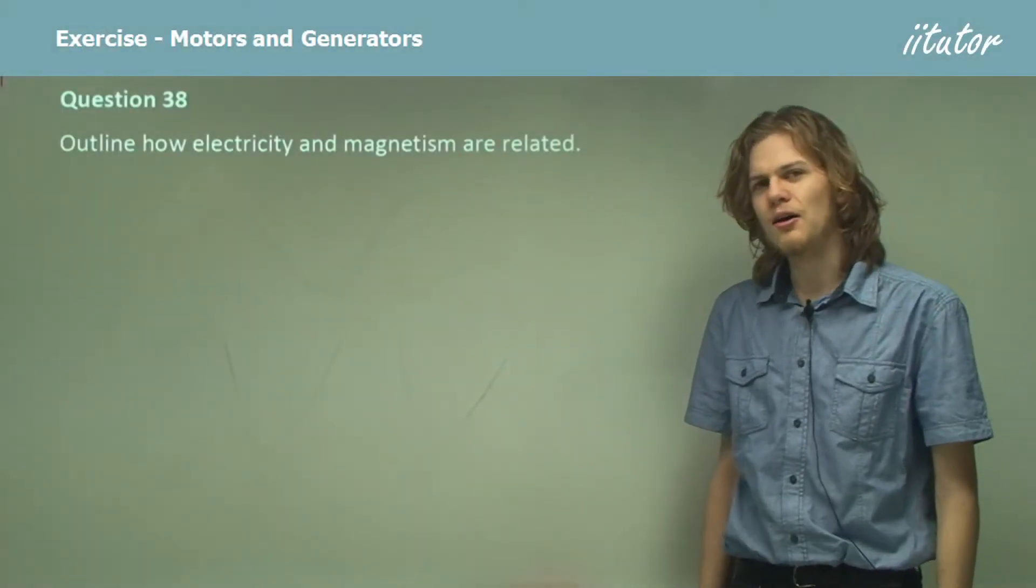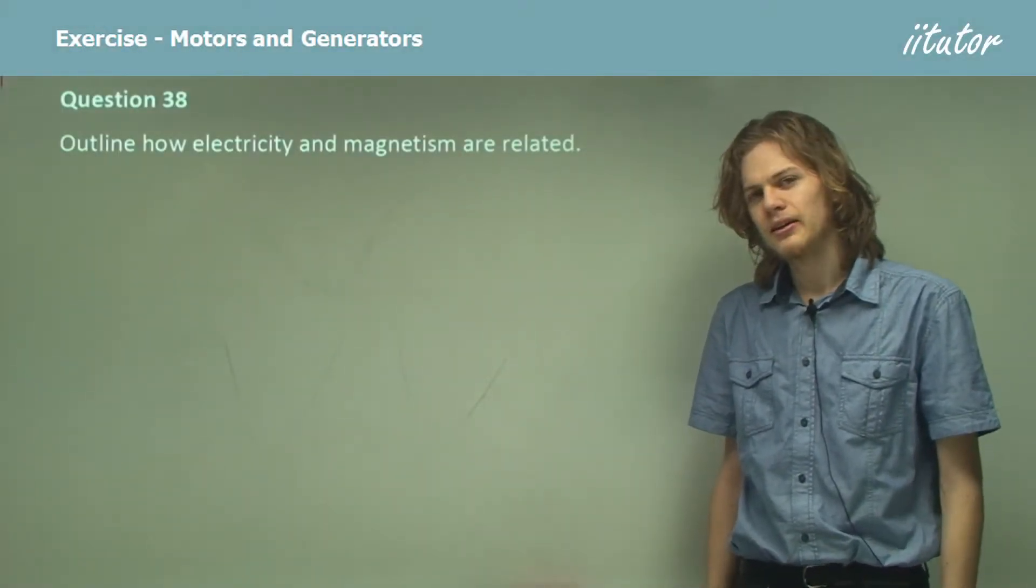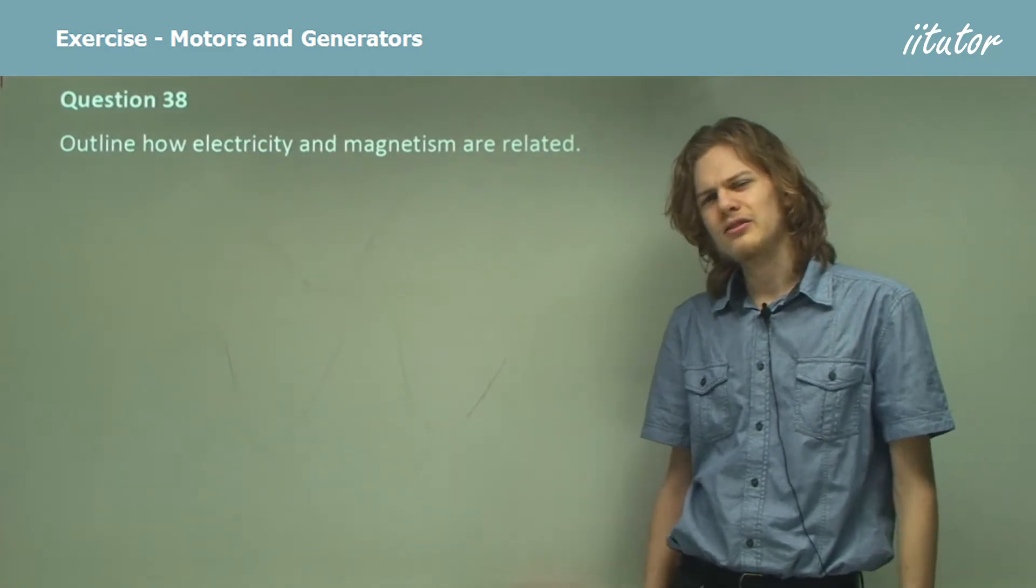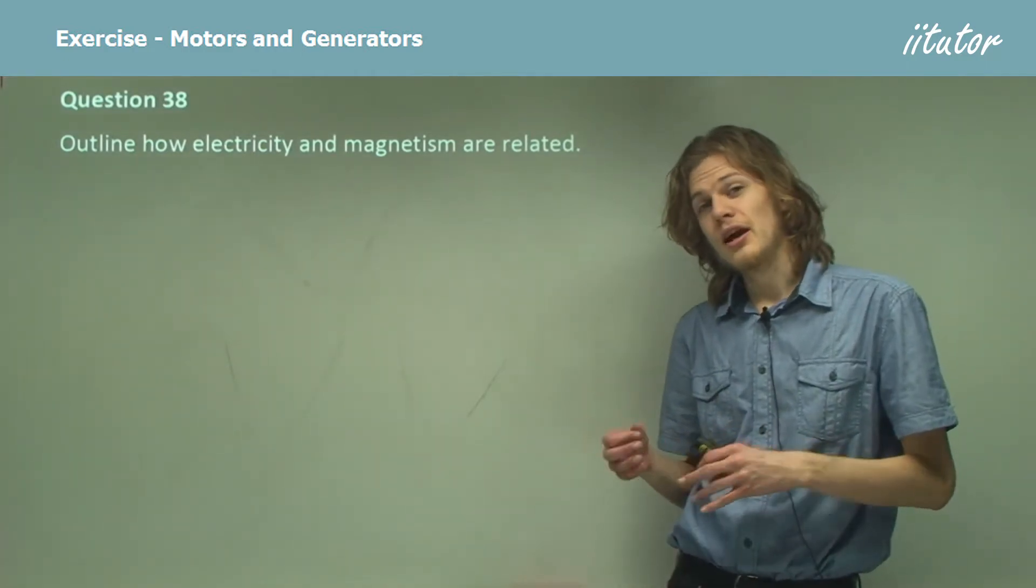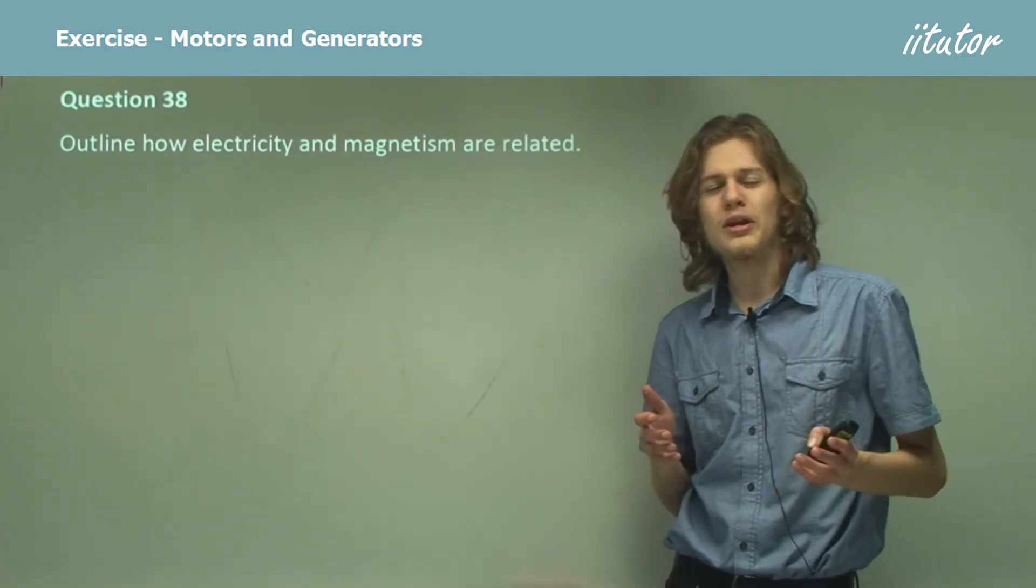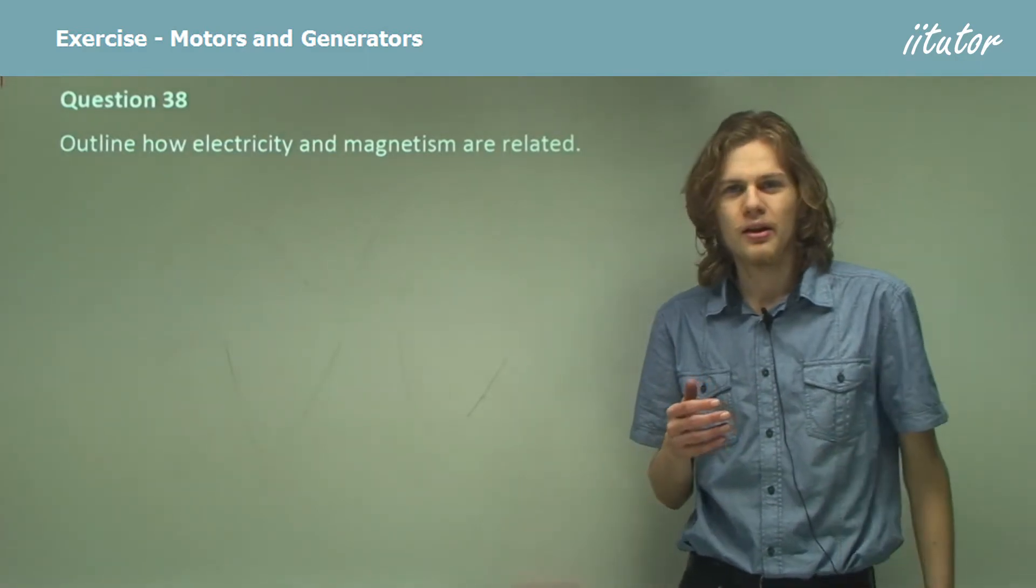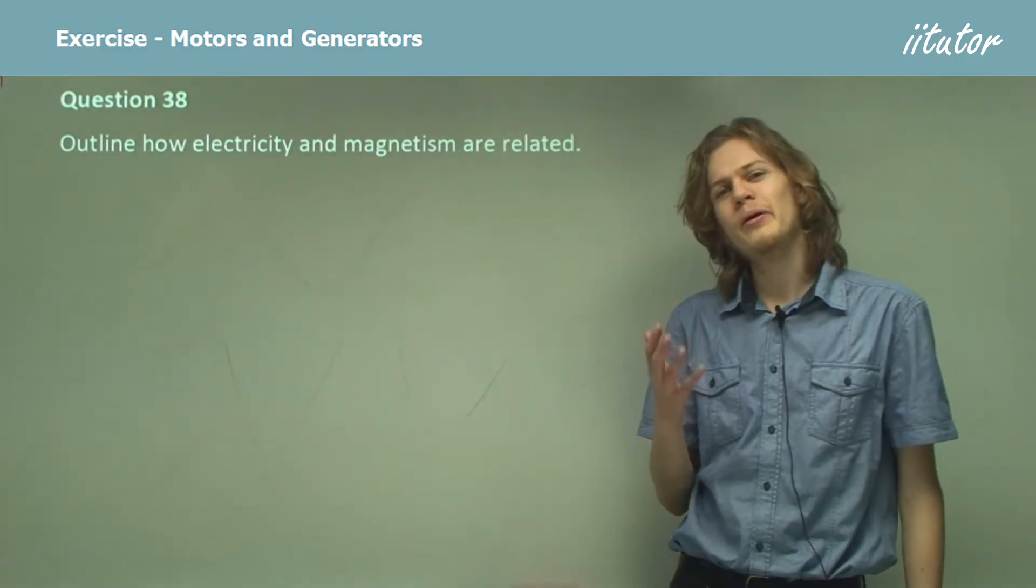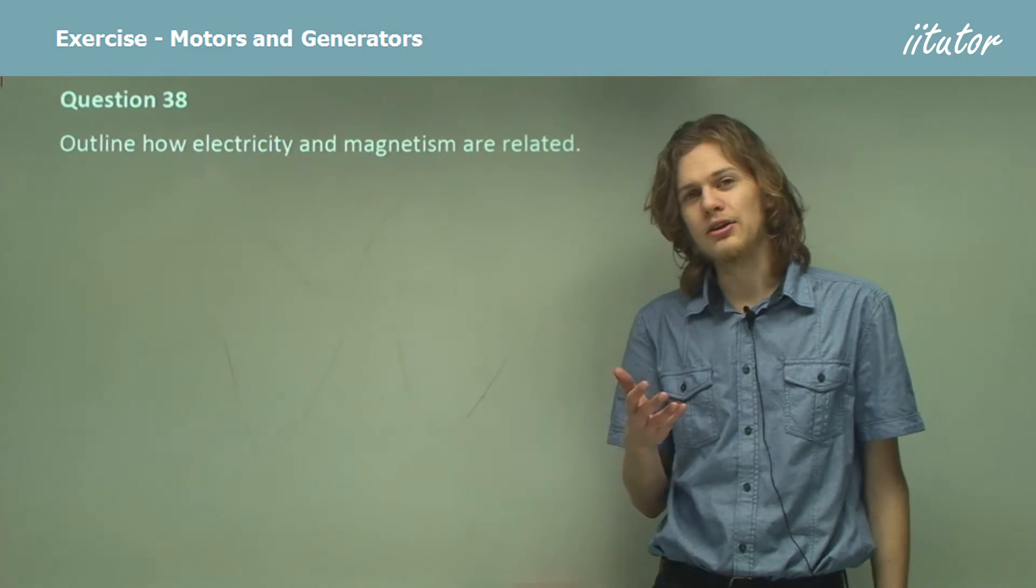Outline how electricity and magnetism are related. This is a bit of a tricky question. 200 years ago, people wouldn't have been able to answer it very well. Luckily, since then we've got a better understanding of exactly how they're related.